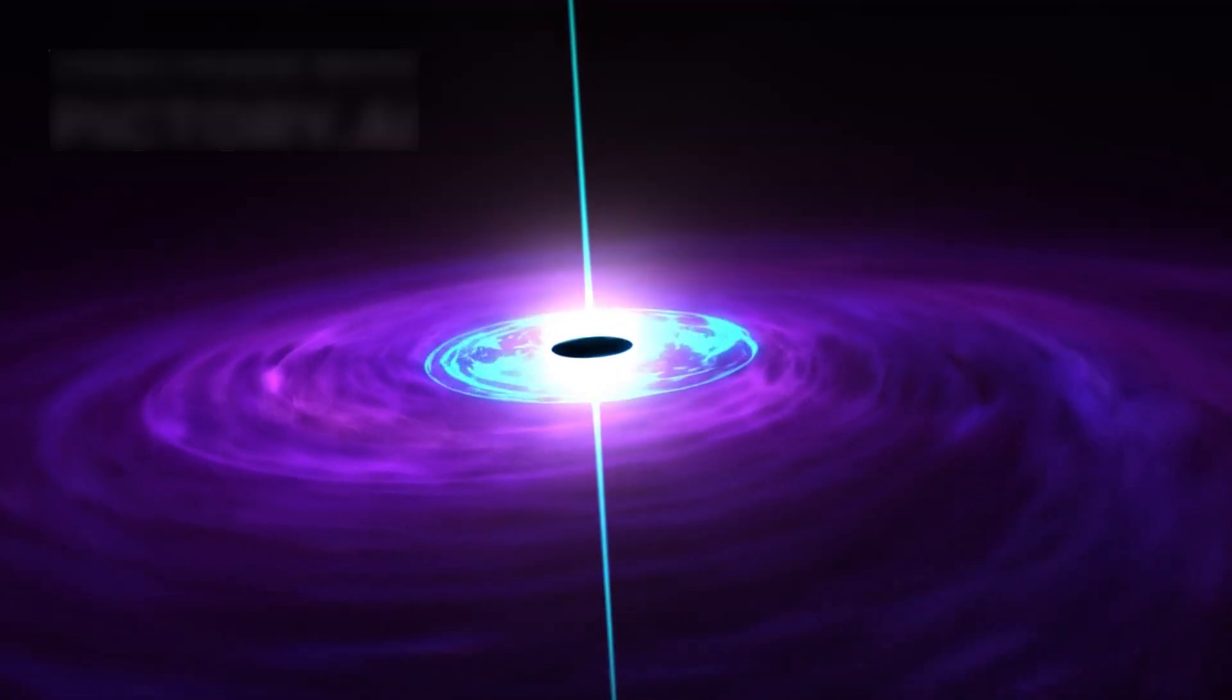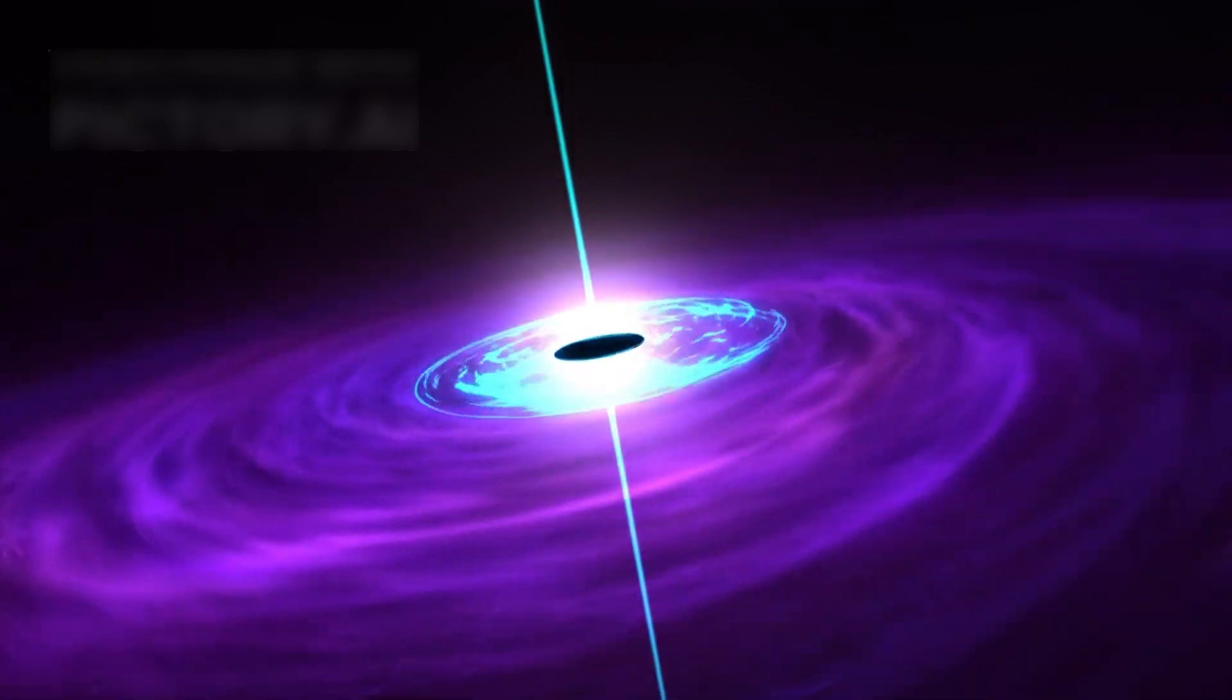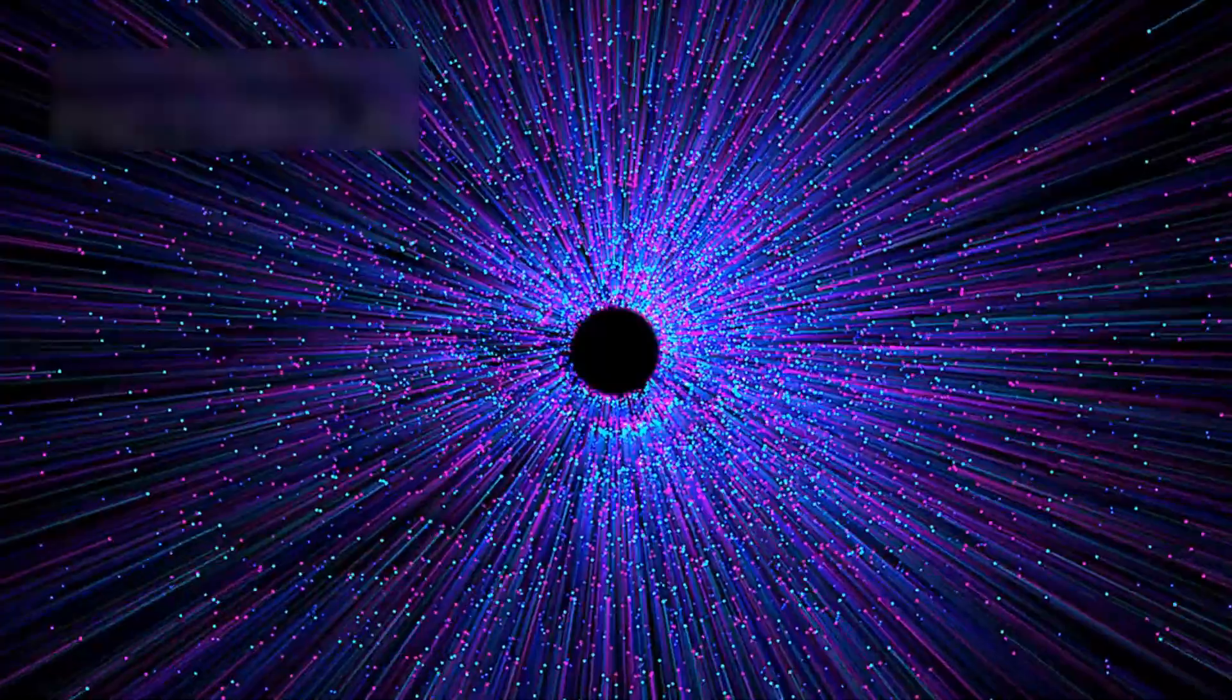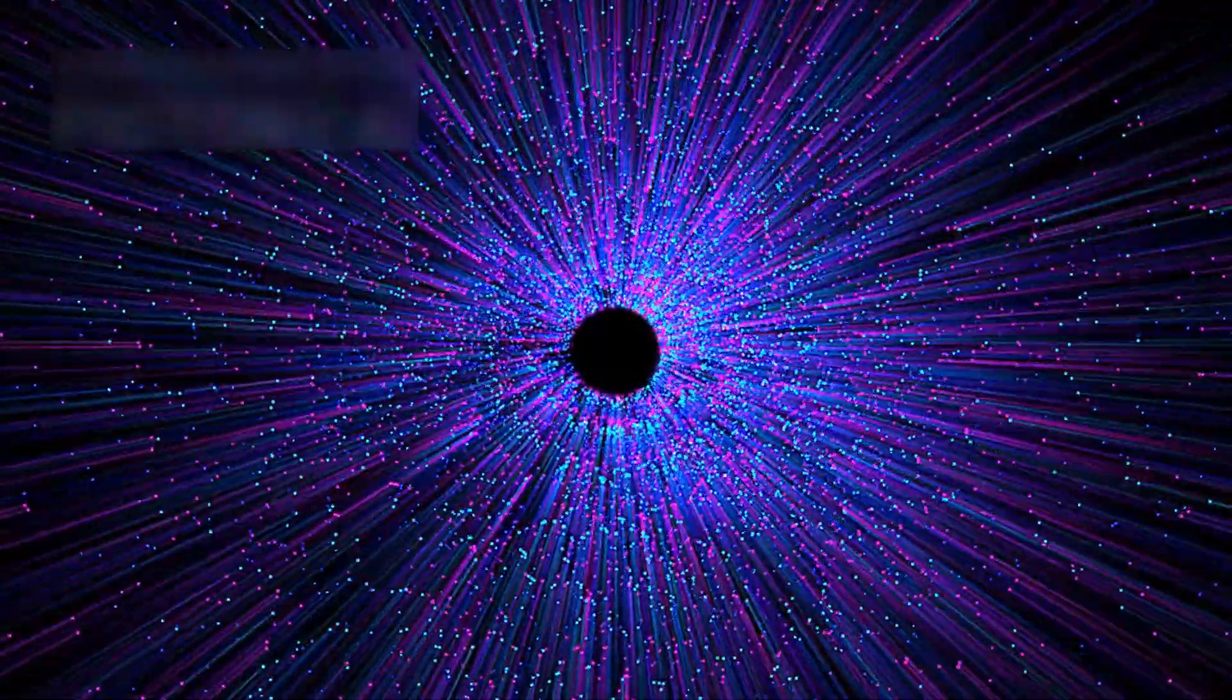Gas falling into it was heated to millions of degrees, forming a glowing corona. This corona lit up with intense X-ray flares, bright flashes bursting near the abyss. But suddenly, some of these flares didn't disappear into the black hole—they bounced back.